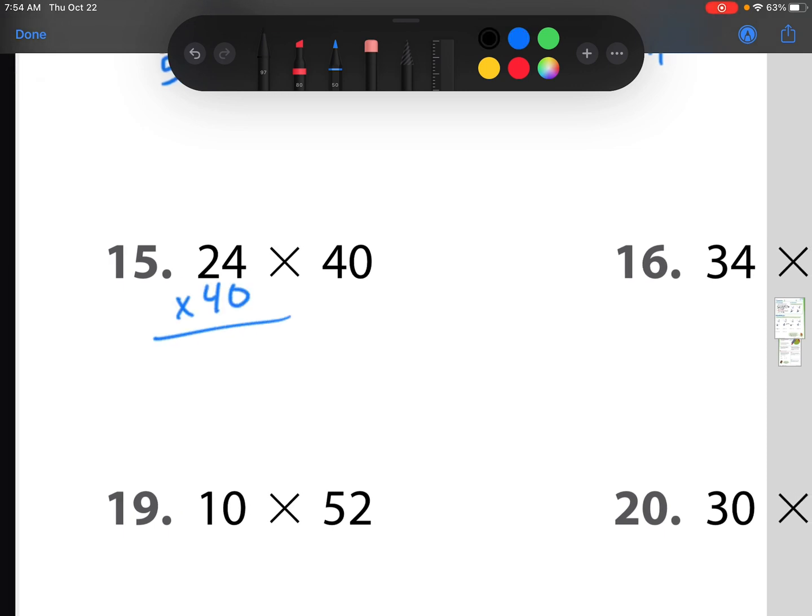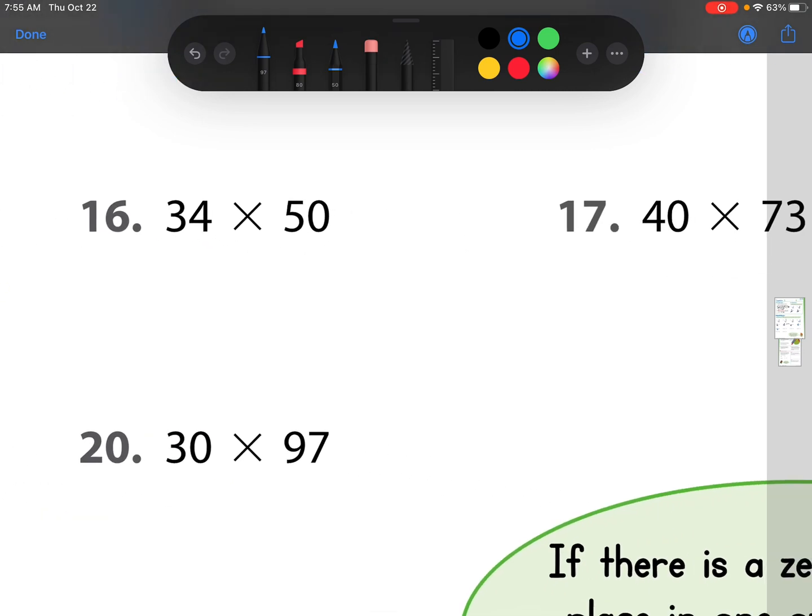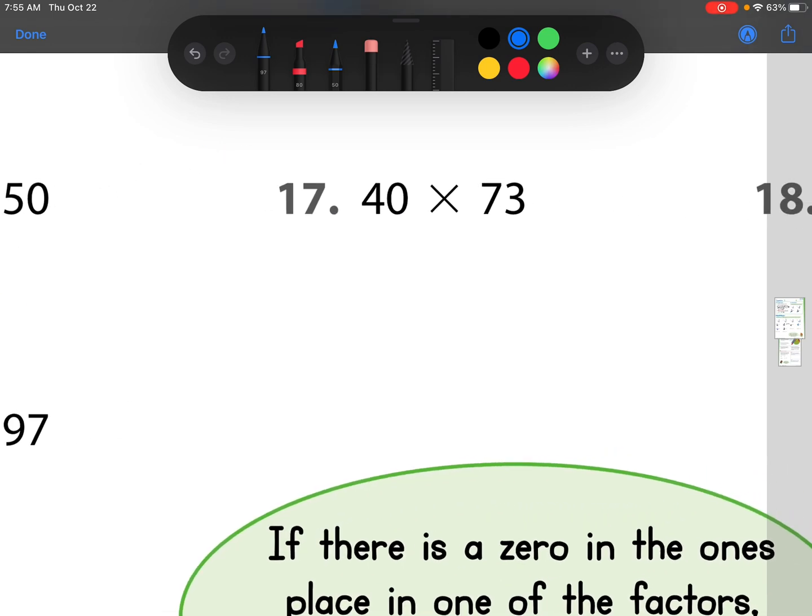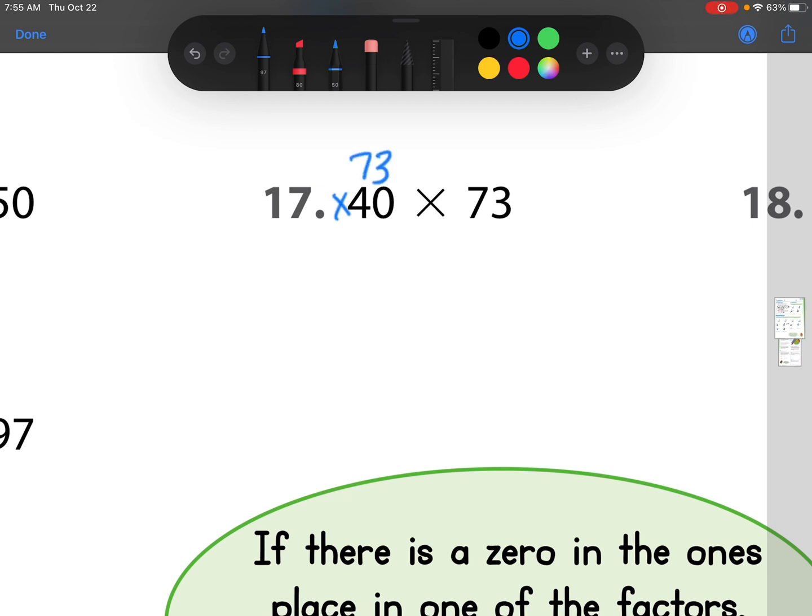So now what do we have for this one? 24 times 40. I put the zero down, since I have a zero in the ones place value. And then I do 4 times 4 is 16, and I regroup. Then I do 4 times 2 is 8, plus 1 is 9. Number 16. 34 times 50. So I put a zero down, and now I'm ready to start multiplying. 5 times 4 is 20, so I put the zero, regroup the 2. 5 times 3 is 15, plus 2 is 17.